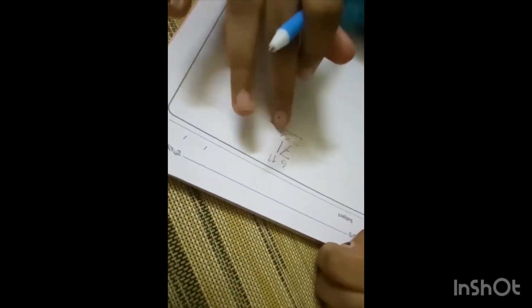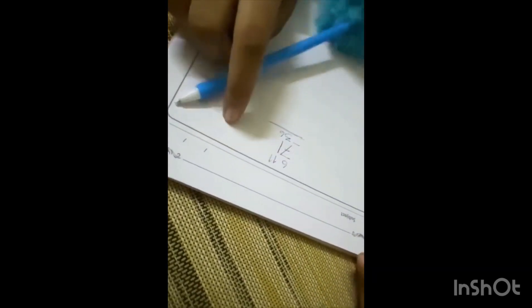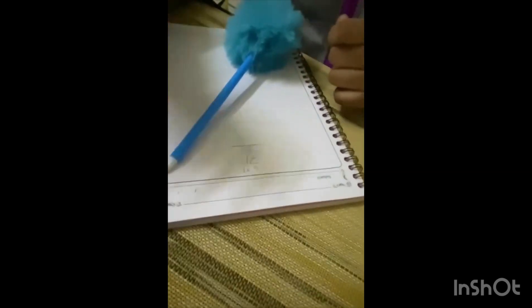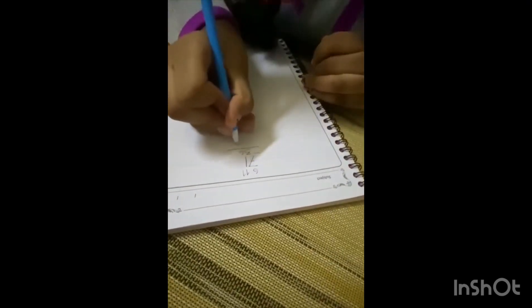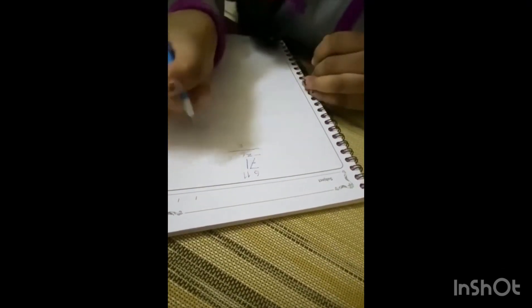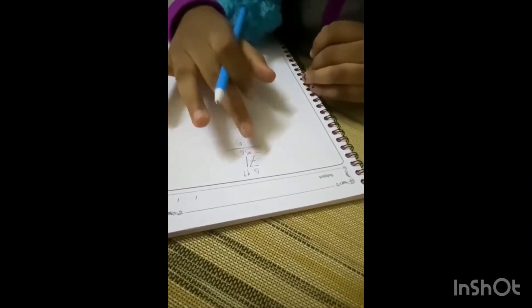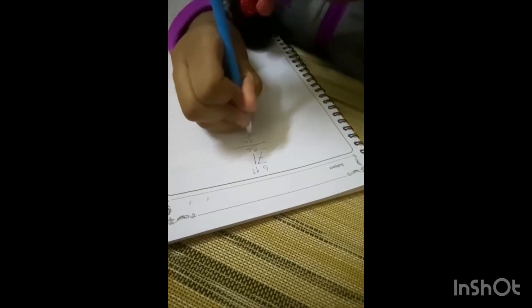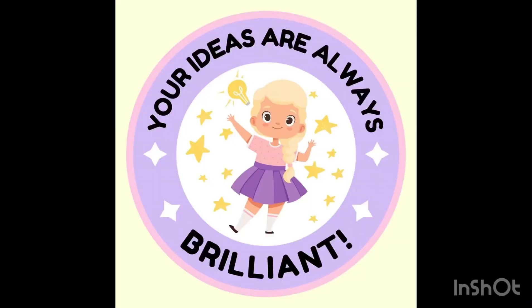Eleven minus six. After six: seven, eight, nine, ten, eleven equals five. Six minus three equals three. Equals 35.